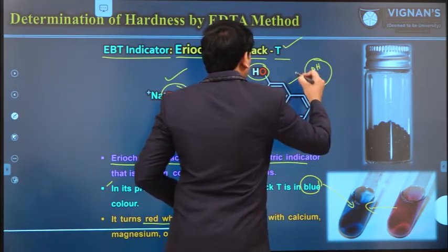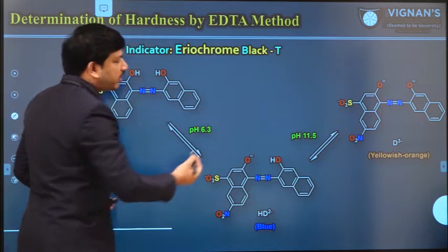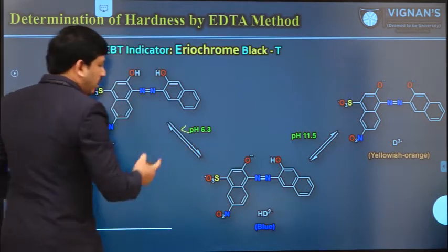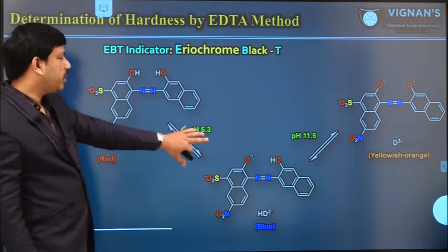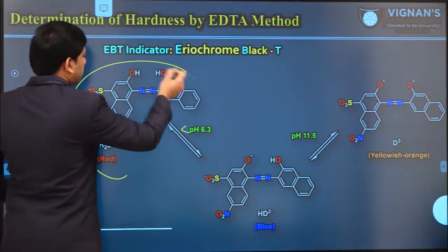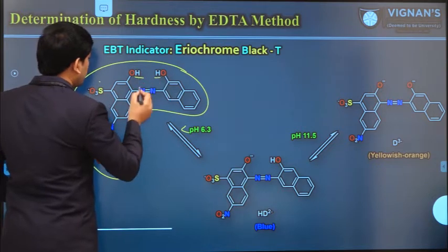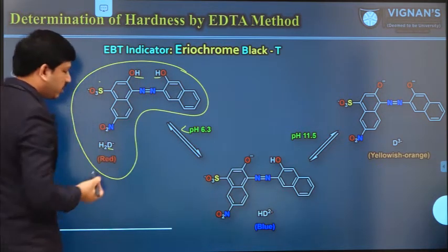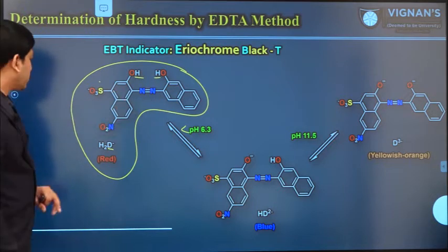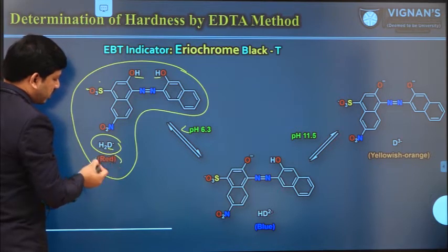This indicator is highly sensitive to pH values. I am explaining the color changes of the indicator at different pH values. If the pH value is less than 6.3 — slightly or highly acidic — then this molecule exists with two removable protons (H₂D⁻ form), and it is available in red color. If you maintain pH greater than 11.5, in highly basic conditions these two protons can easily be removed, and the molecule is available in the D³⁻ form, which is yellowish orange in color.